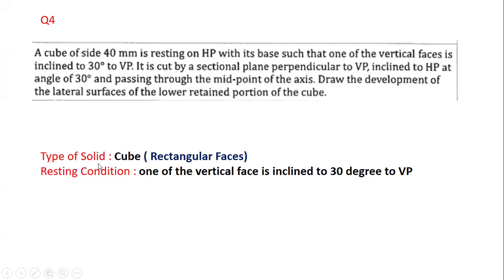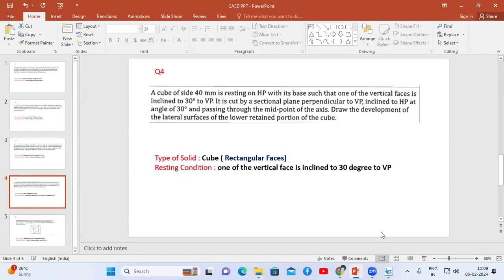Here the type of solid is a cube, that is a square prism. We know that when we cut the square prism or cube and unfold it, we're going to see rectangular faces. In order to construct the top view, we need the resting condition. Here the resting condition is one of the faces is inclined at 30 degrees to VP.